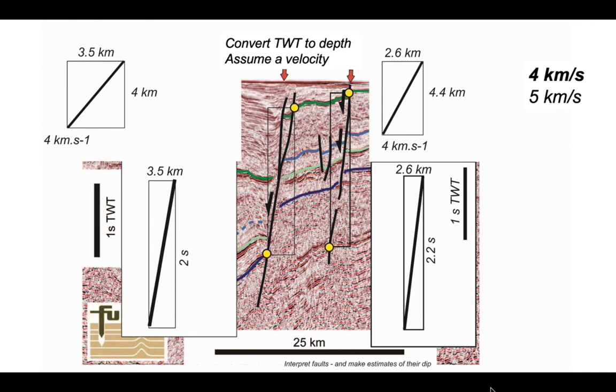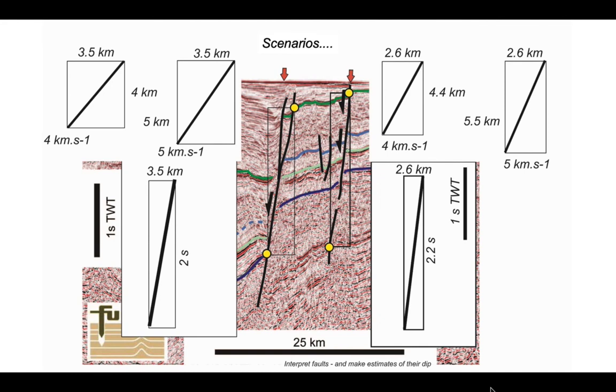Now let's do the same thing for the seismic velocity of 5 kilometres, and this is how it works out. The horizontal scales obviously remain the same - we're not changing the horizontal distance, that remains in kilometres. The travel time, 2 seconds for the left-hand fault, becomes 5 kilometres in depth if we use 5 kilometres a second. For the right-hand fault, our 2.2 seconds of travel time becomes 5.5 kilometres of real kilometres in depth.